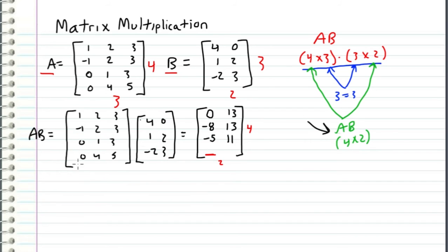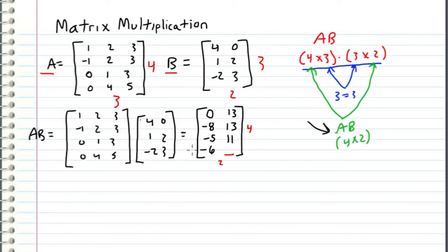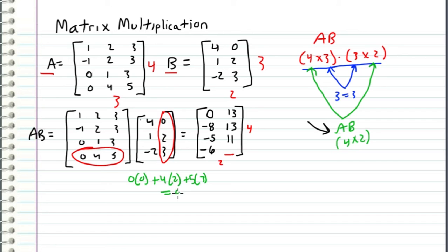Now for the fourth row and first column, the dot product is zero times four plus four times one minus five times two, which equals four minus ten, equaling negative six. Finally, for the fourth row and second column, the dot product is zero times zero plus four times two plus five times three, which equals eight plus fifteen, which equals 23. The product matrix is now completely filled.